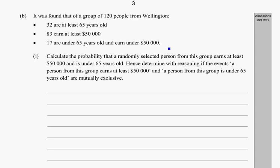Here we're going to look at Part B of the sample examination, and we've got some new information. It was found that a group of 120 people from Wellington: 32 of them are at least 65, 83 are earning at least $50,000, and 16 are under 65 years old and earn under $50,000. We need to calculate the probability that a randomly selected person earns at least $50,000 and is under 65.